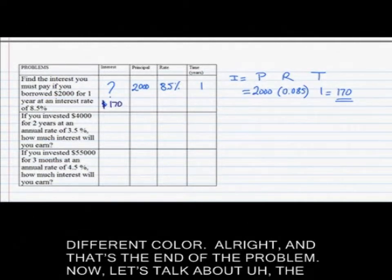Now, let's talk about the second problem. If you invested $4,000 for two years at an annual interest rate of 3.5%, how much interest will you earn? Let's put down what we know. $4,000 is our principle, we're talking about two years so T is 2, and the annual rate is 3.5%. Again, the unknown is the interest.